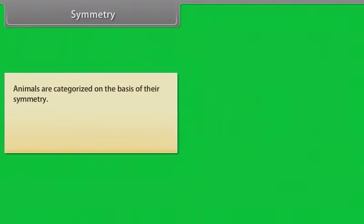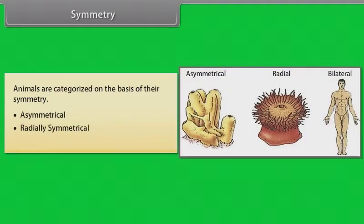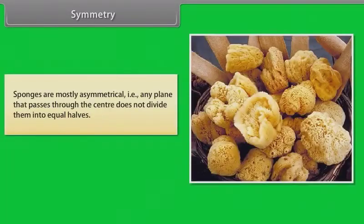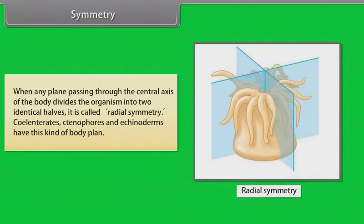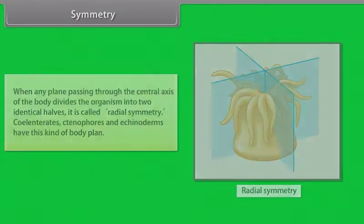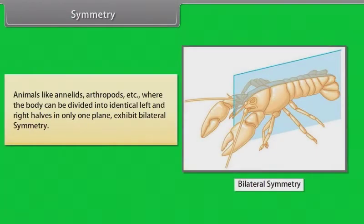Animals are categorized on the basis of their symmetry. They are: asymmetrical, radially symmetrical, and bilaterally symmetrical. Sponges are mostly asymmetrical — that is, any plane passing through the center does not divide them into equal halves. When any plane passing through the central axis divides the organism into two identical halves, it is called radial symmetry. Coelenterates, Ctenophores and Echinoderms have this kind of body plan. Animals like annelids, arthropods, etc., where the body can be divided into identical left and right halves in only one plane, exhibit bilateral symmetry.